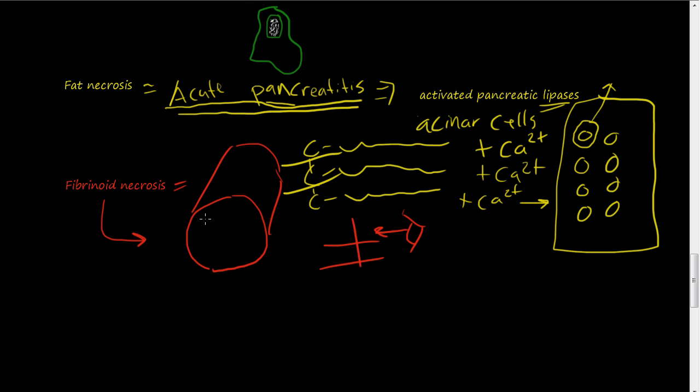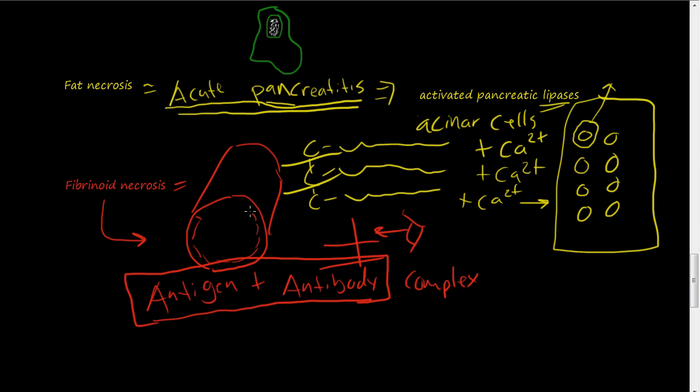So fibrinoid necrosis is, you have some kind of antigen plus an antibody complex. So you have some kind of antigen and then the antibody attaches to that. And we'll talk more about this process in an immunology section coming up later. But anyways, the antigen and antibody complex gets attached around the cell walls here, the inside of the cell wall. And this necrosis kind of just happens and it usually happens in arteries and vessel walls.